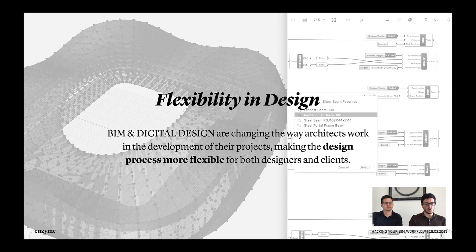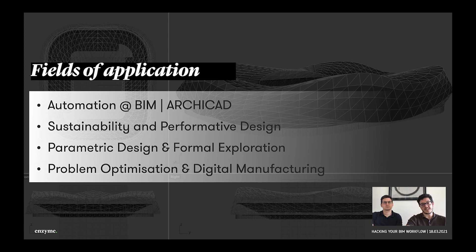We don't design one by one anymore — we don't just propose one idea to the client. We have certain parameters with which we can experiment and combine to design different options at the same time. This parametric flexibility allows us to apply automation for generating data and documentation, work with sustainability analysis, have a lot of freedom in formal exploration, and of course go into the fields of optimization and digital manufacturing.